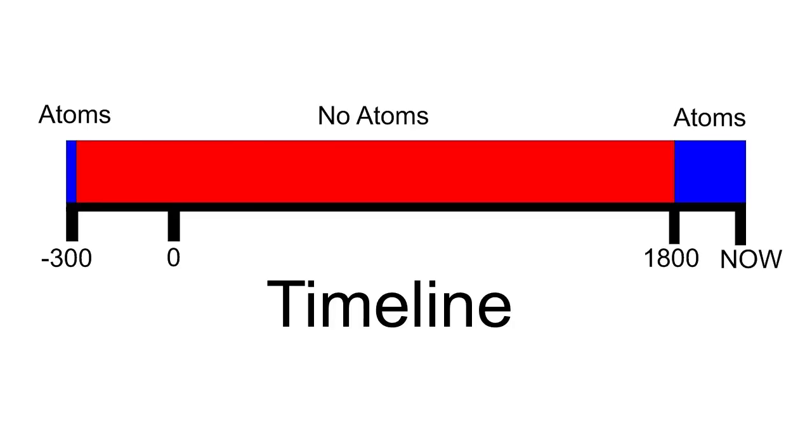But Aristotle claimed there are no atoms and no void. His incorrect view held sway until around 1800. Now imagine you lived during the 2000 years of no atoms. How could you have convinced people that Aristotle was wrong and atoms do exist?